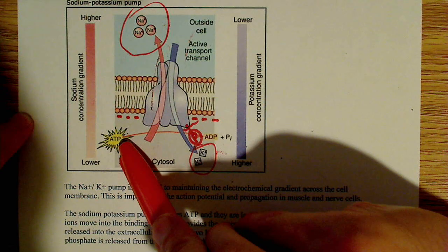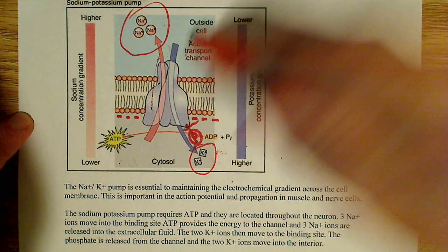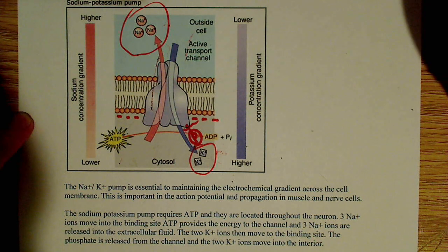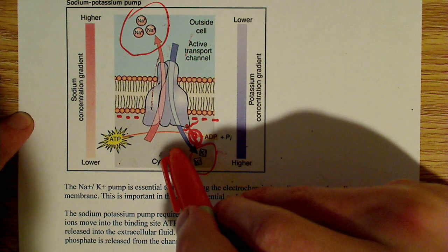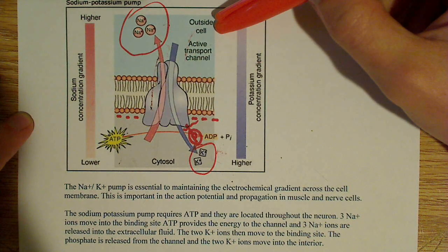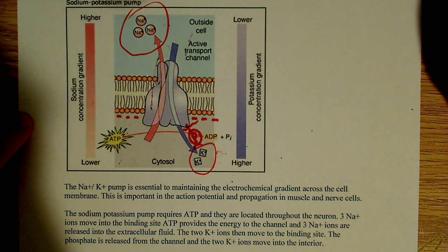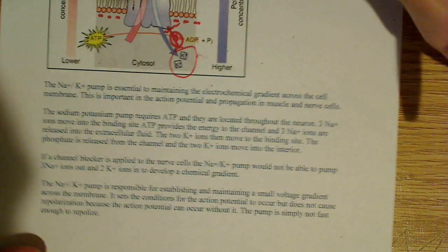ATP hydrolysis is used, is coupled to this process to perform active transport. In the cytosol, the calcium is low concentration. Outside the cell, in the extracellular fluid, the calcium concentration is higher, although the concentrations are much lower than sodium and potassium in both cases. But anyway, that's just an aside.